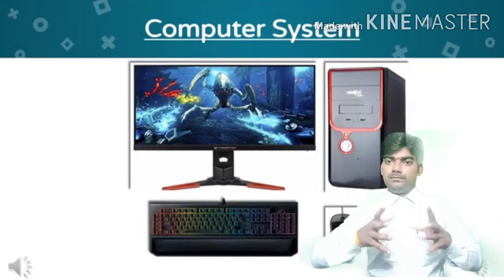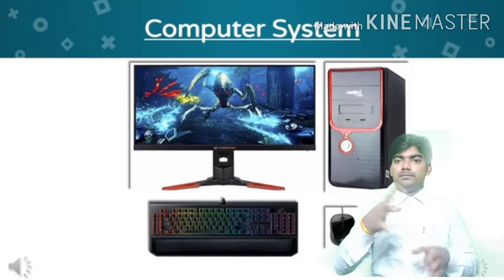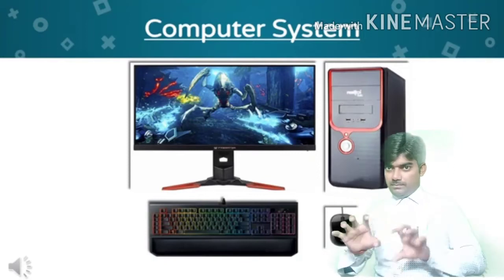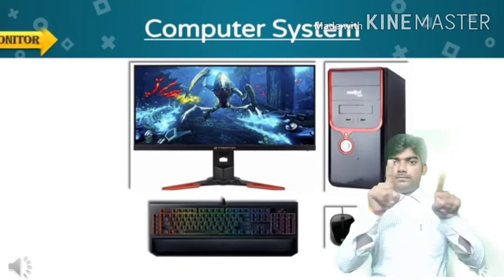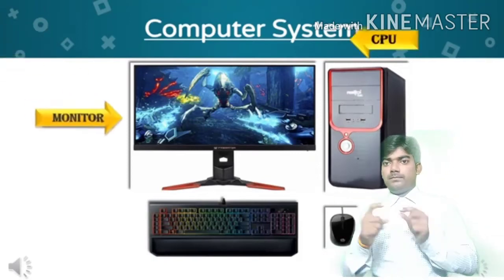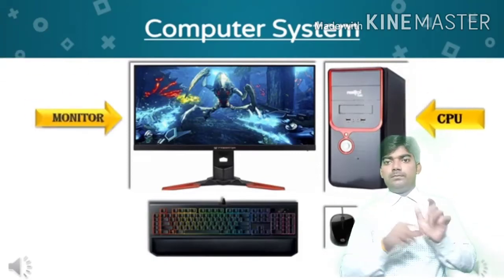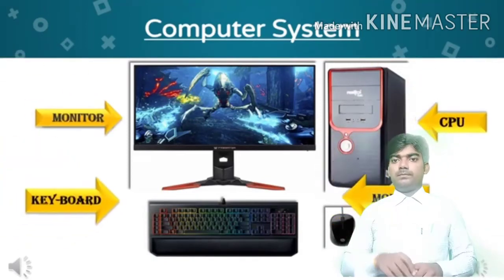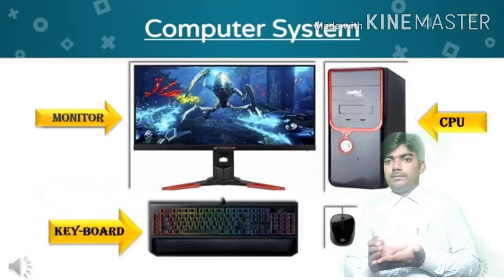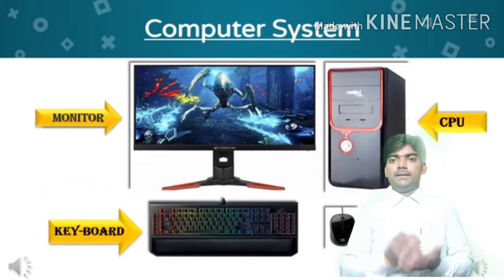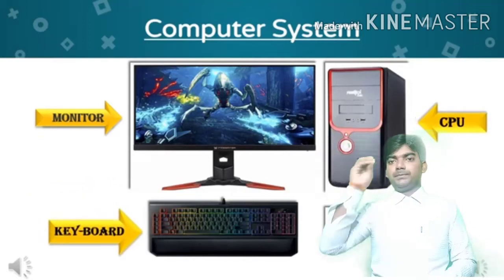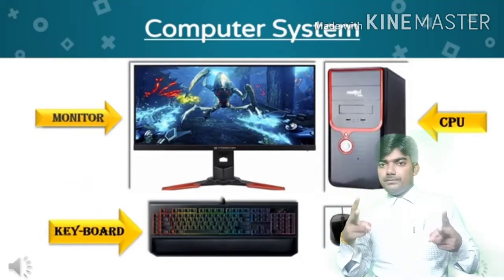A computer is a machine that has four main parts: Monitor, CPU, Keyboard and Mouse. Let us learn about these parts one by one.